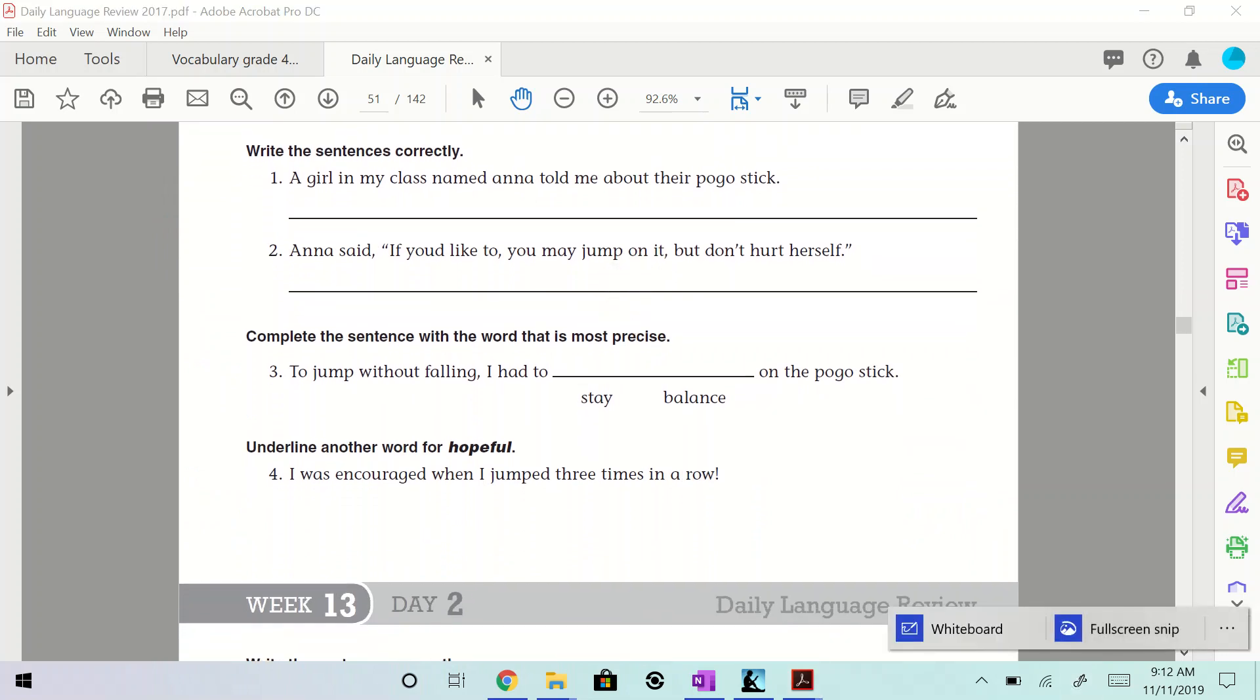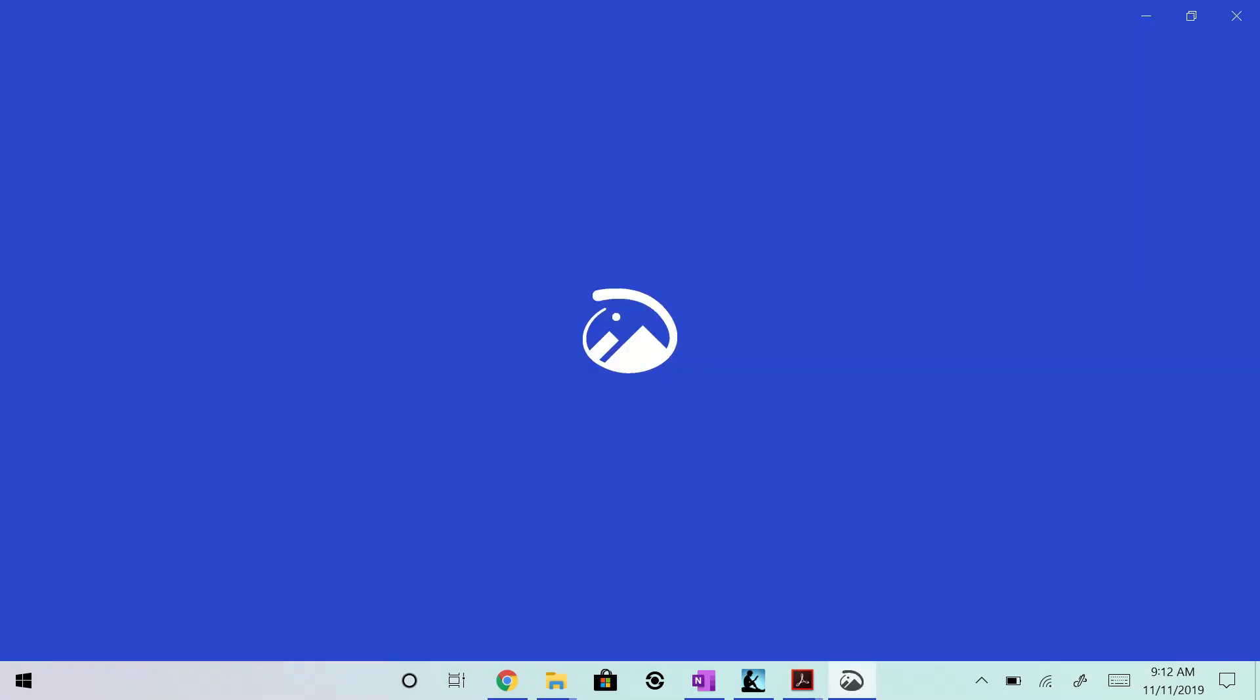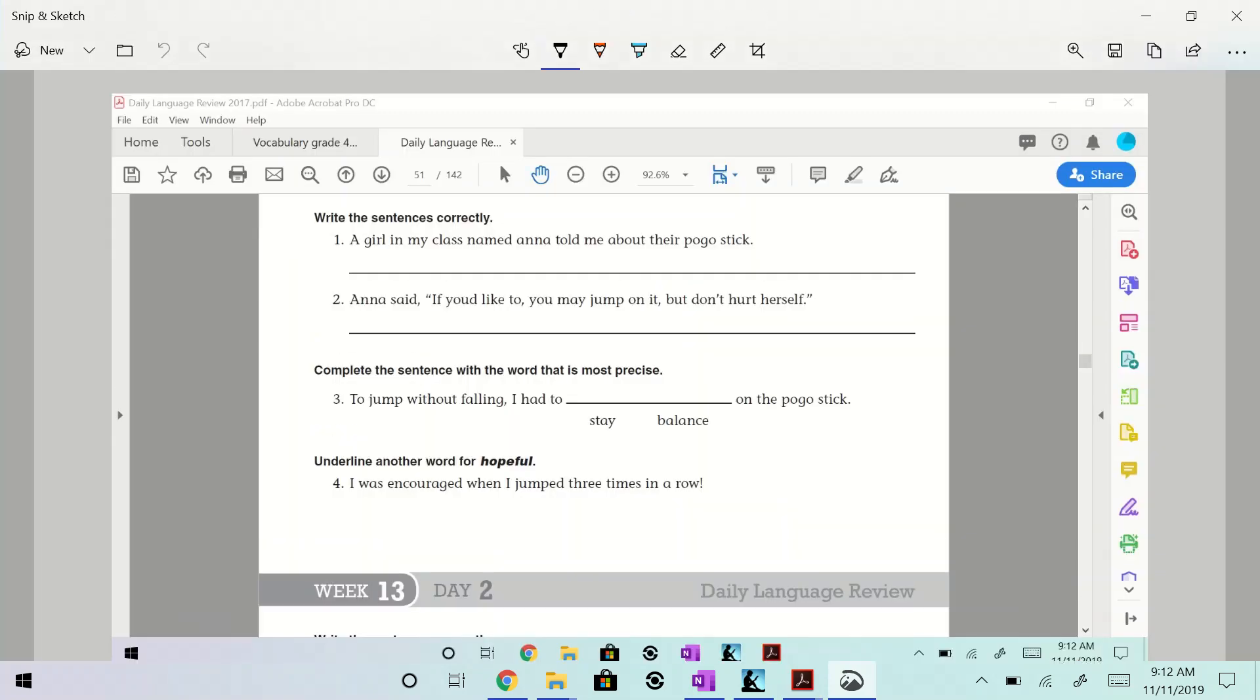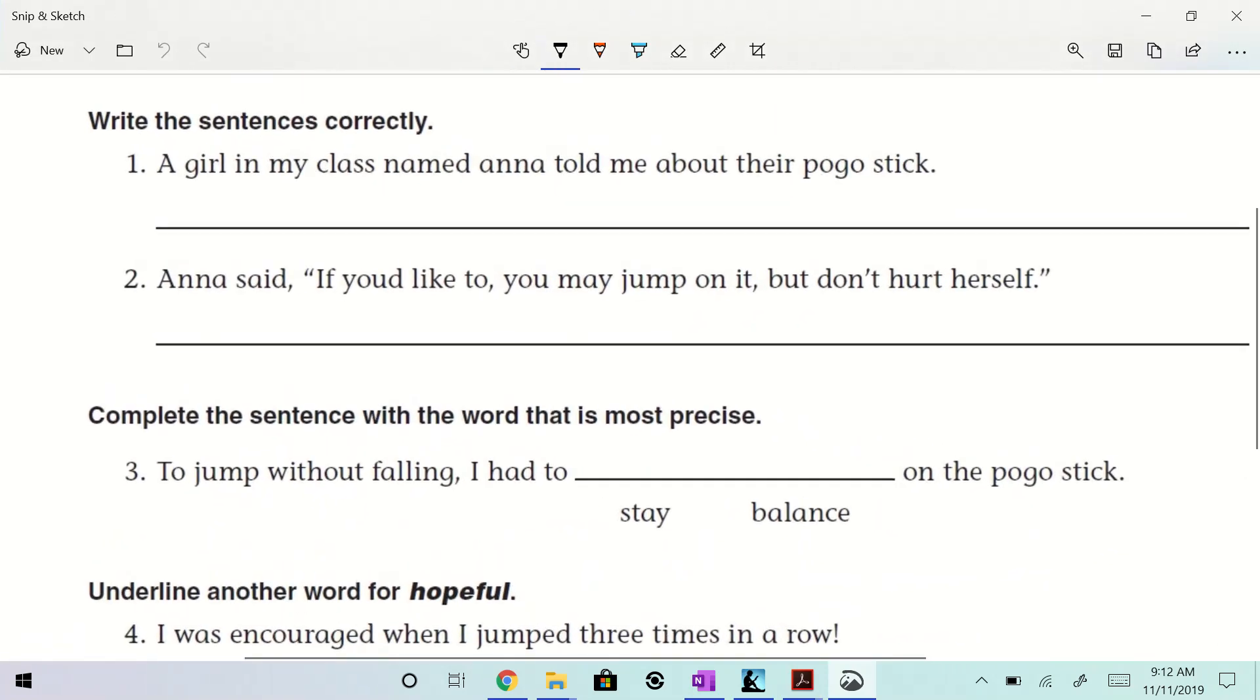We need to capitalize that. Why? Why do we capitalize it? What is Anna? What is it? It's a name, but what do we call it? What type of noun? It is a proper noun. Everyone is ready to go on a Monday. I love it. A girl in my class named Anna. Anna should be capitalized. A girl in my class named Anna told me about their pogo stick. It should be her, right? It's got to match, right?